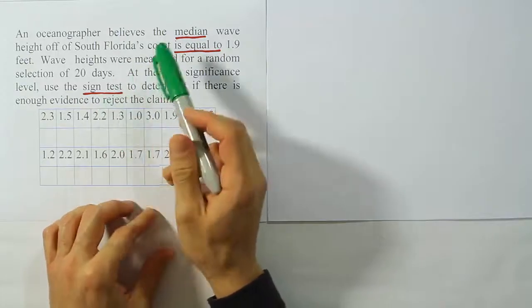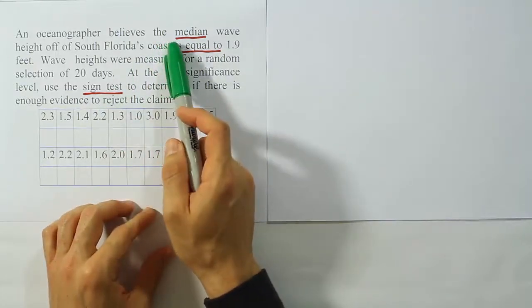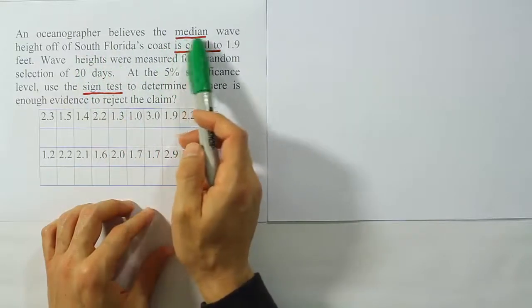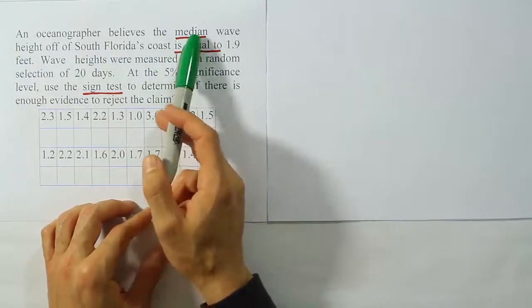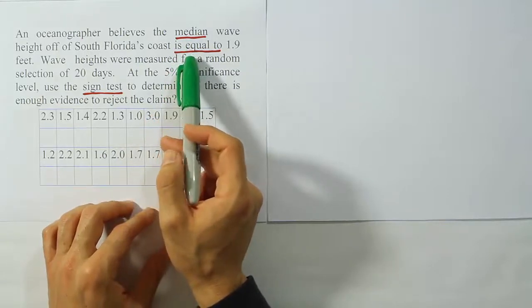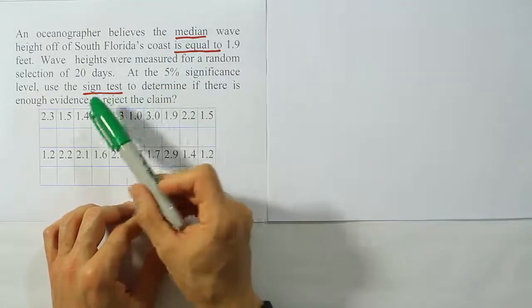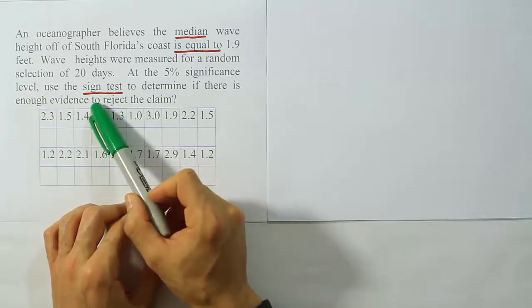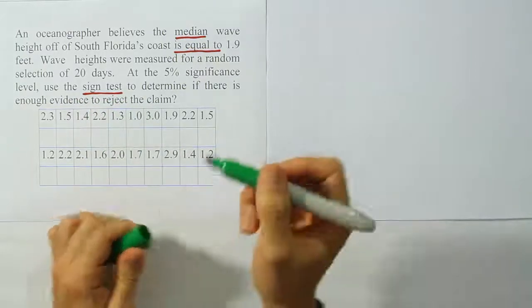There's a couple of clues that this is a non-parametric procedure. The first one is that they're talking about the median wave height as opposed to the mean wave height. That's a good indication we're going to be dealing with a non-parametric procedure. If we know it's going to be non-parametric, what non-parametric procedure? Well, the sign test is clearly stated in the problem that we must use the sign test.